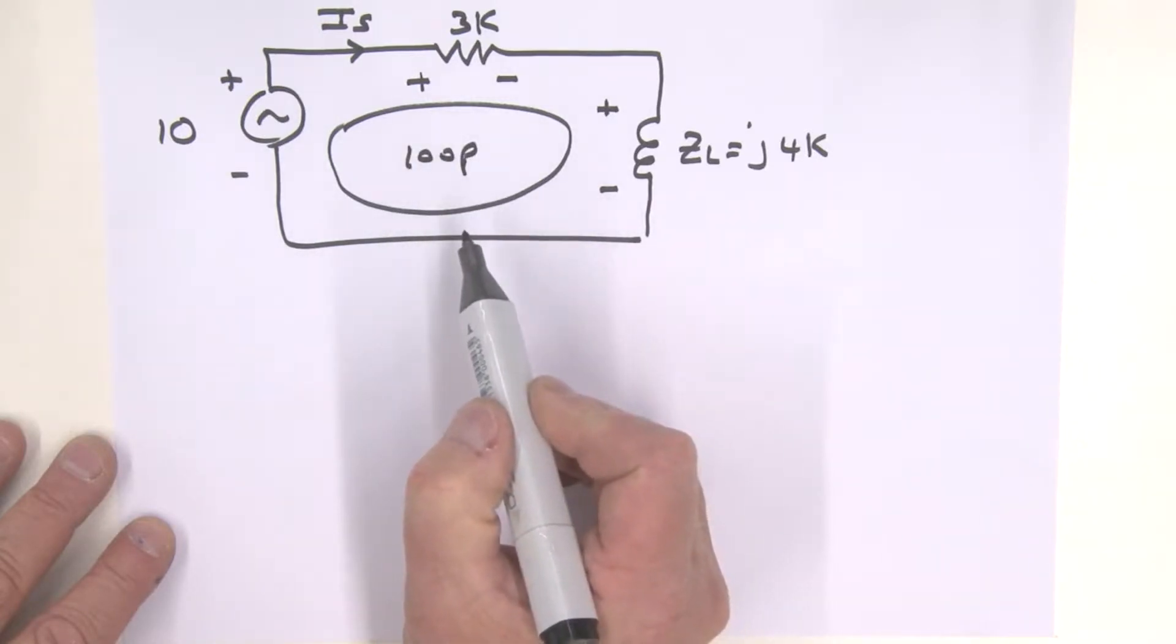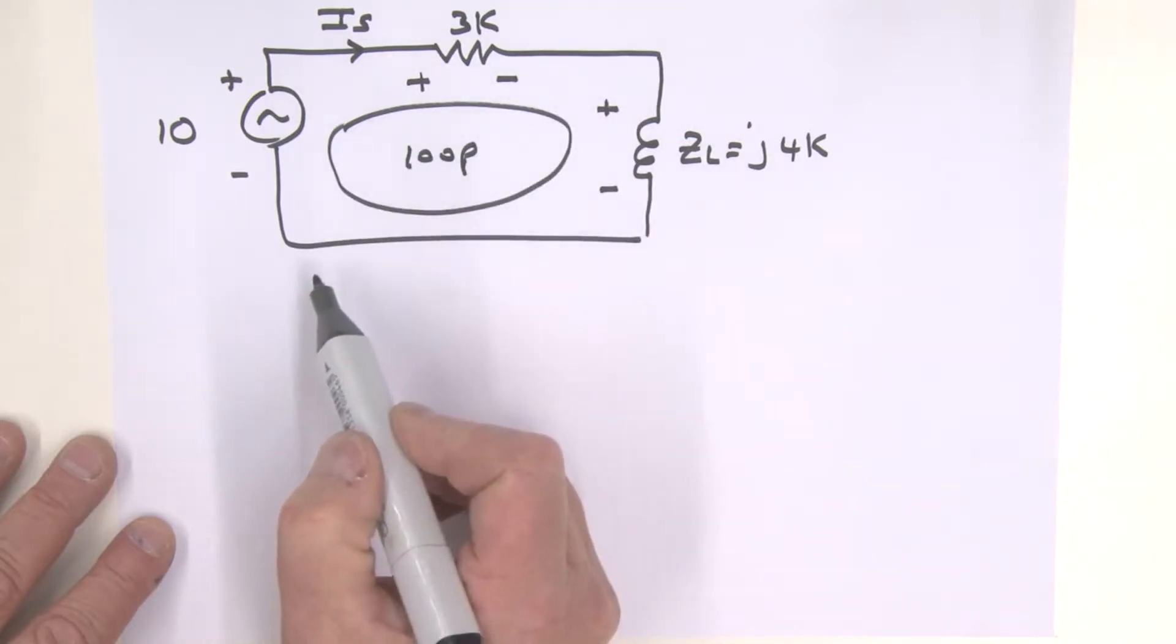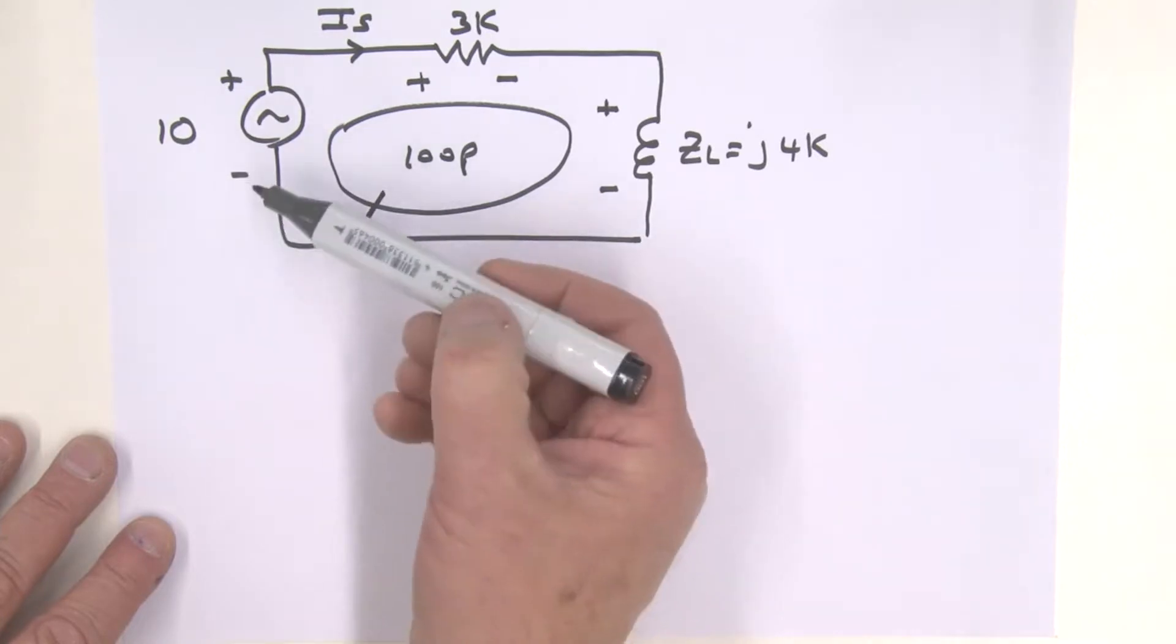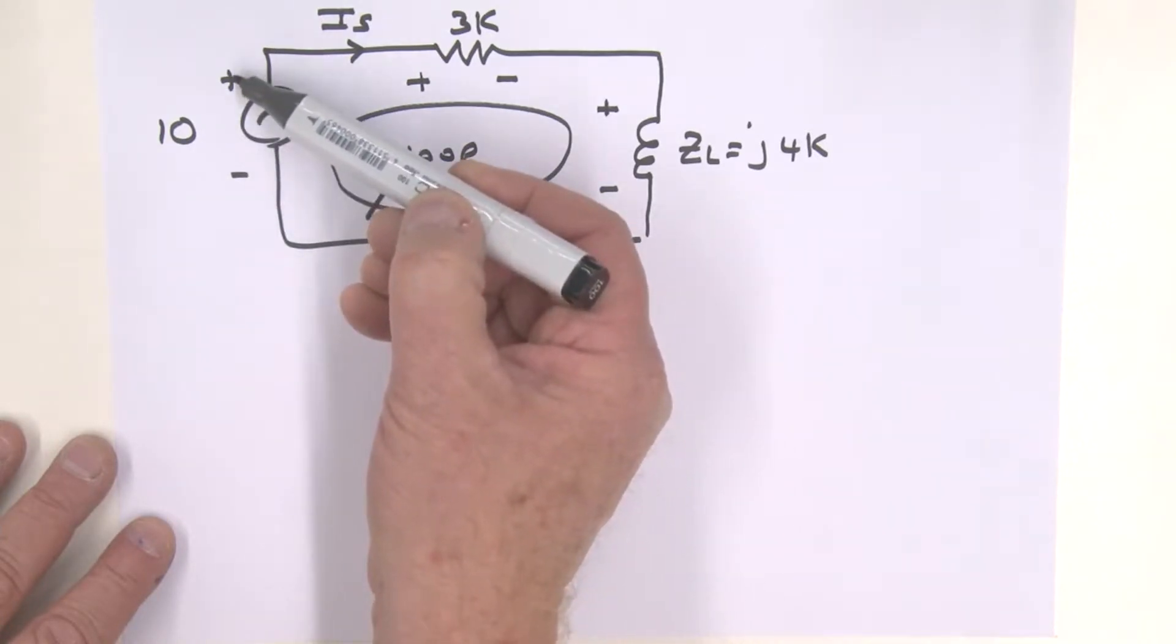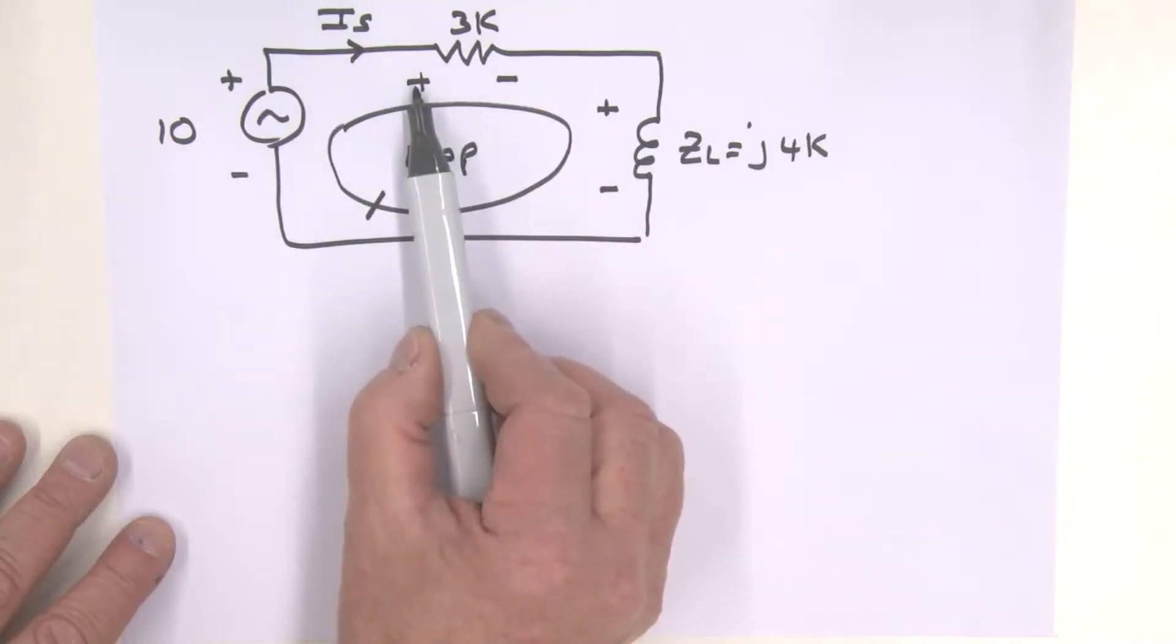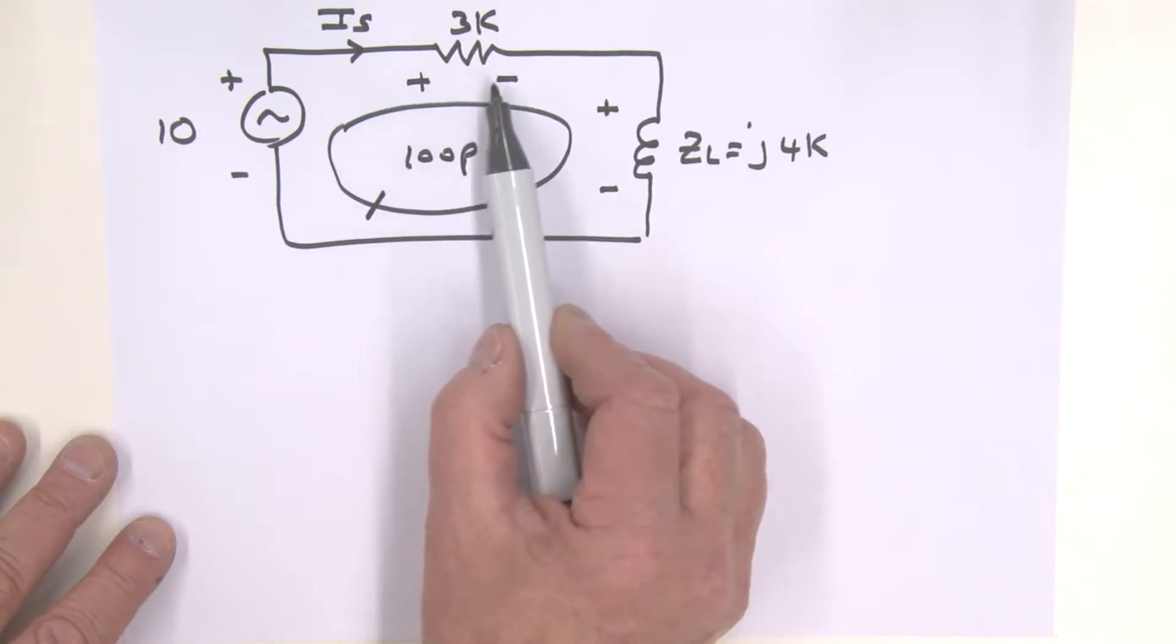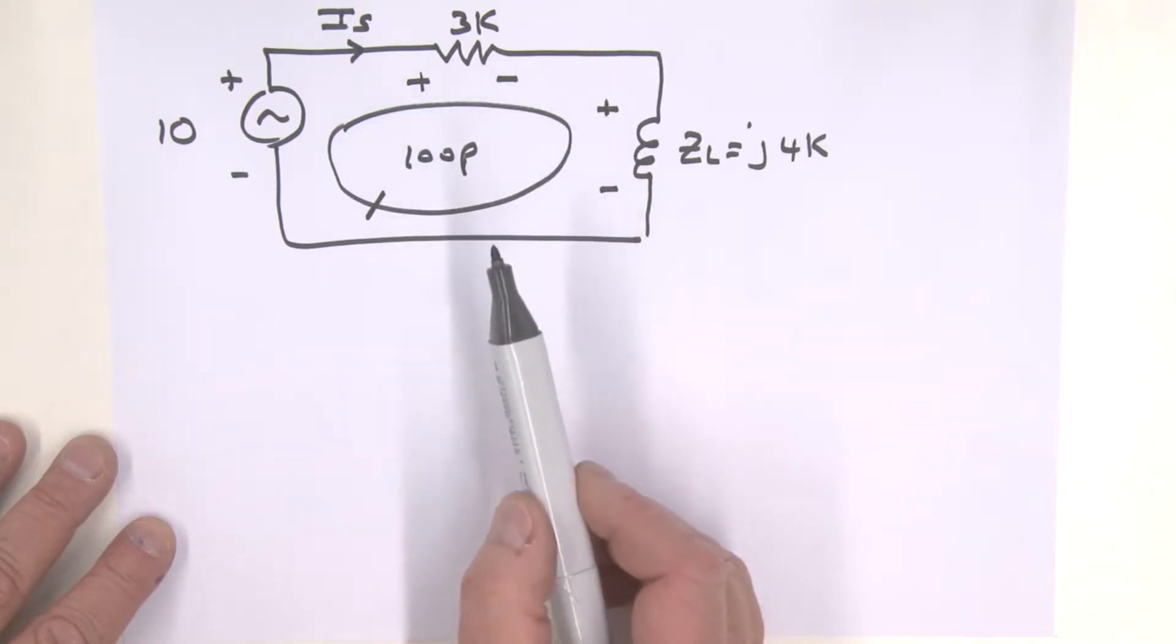So this is Kirchhoff's voltage law, that the sum of the voltages around this loop would be equal to zero. We're going to start at this point here. Just a little convention: if we go up in polarity as we go around the loop, we're going to call it positive. And if we go from a plus to a minus, we're dropping in voltage and we're going to call that a negative as we go around that loop.